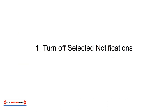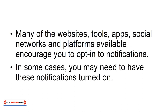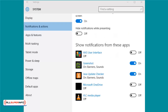1. Turn off selected notifications. Many of the websites, tools, apps, social networks, and platforms available encourage you to opt in to notifications. In some cases, you may need to have these notifications turned on. However, in most cases, you probably don't. To begin the process of reducing information overload, start by turning off notifications on your device that are not necessary for your personal or professional needs.